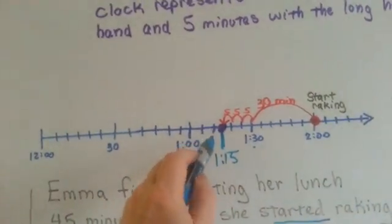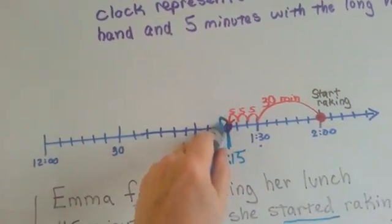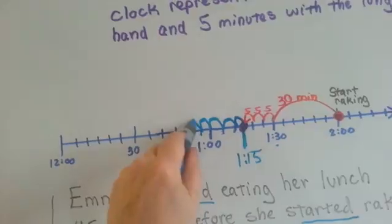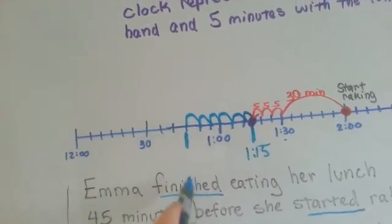So 30 minutes back, counting by fives: 5, 10, 15, 20, 25, 30. It puts us right here. What time is that?